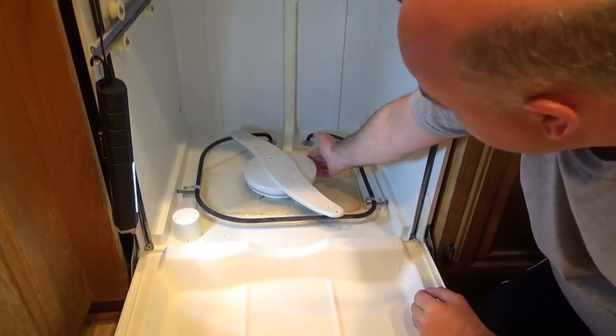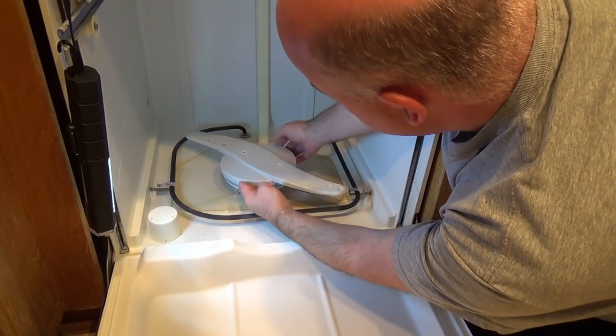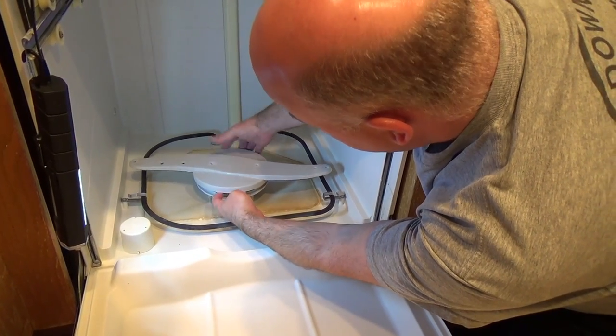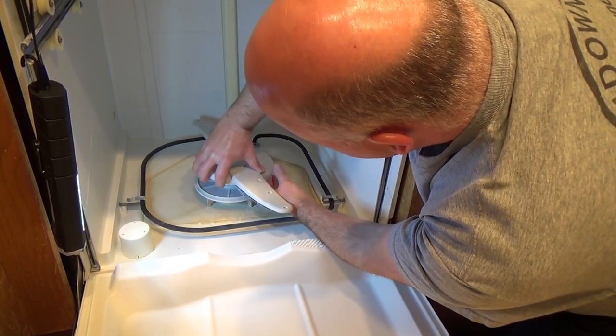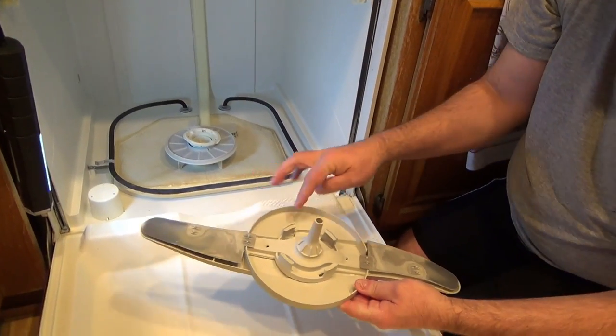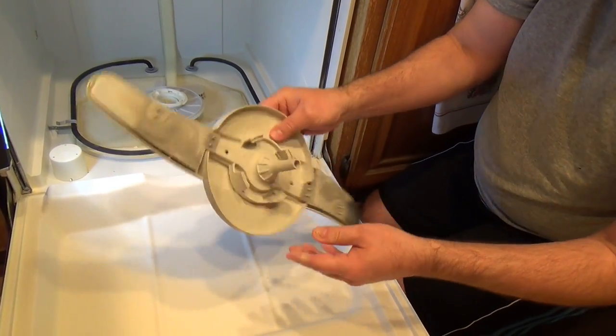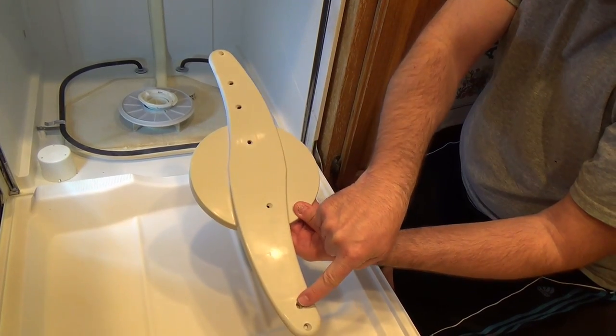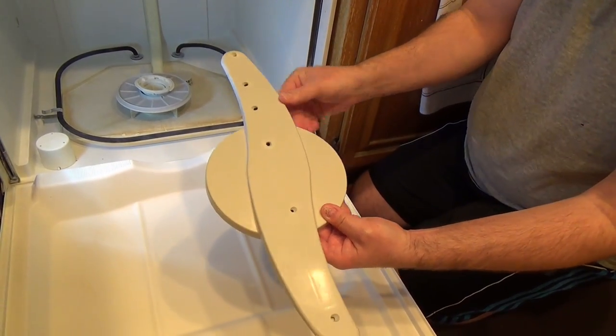So now we're going to take off the bottom washer arm here. You just lift up and turn counter-clockwise, and it comes off. And while you have it apart, make sure it's all clean. The holes where the water shoots out aren't clogged.